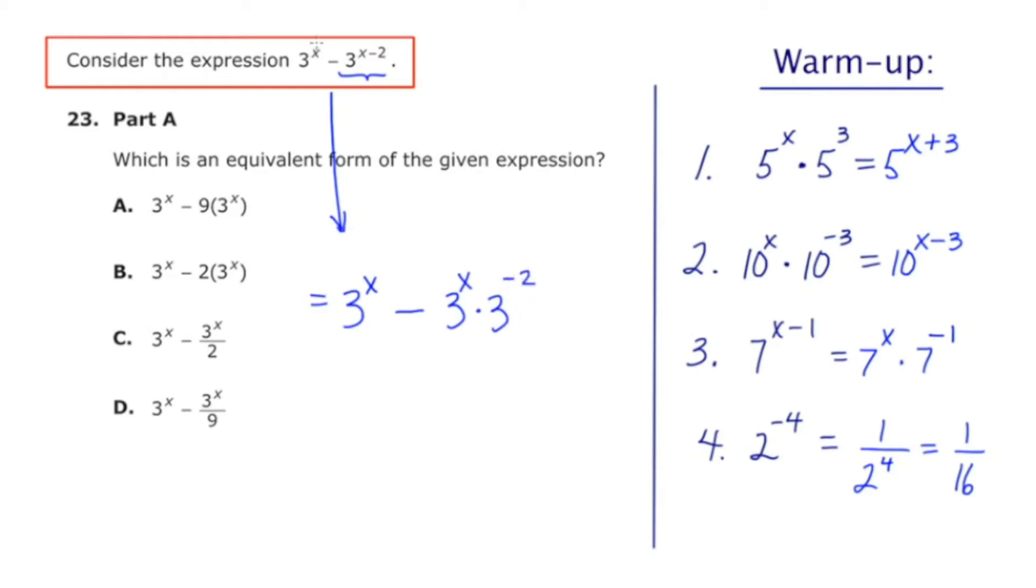and I'm going to write this as 3 to the x times 3 to the negative 2. So to make it very clear, the first term, I didn't do anything to, I just rewrote it. But the second term, I split apart into a product, each with a base of three.